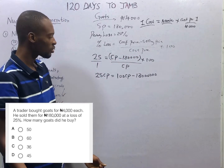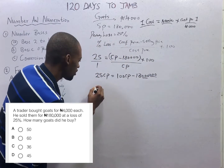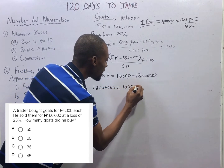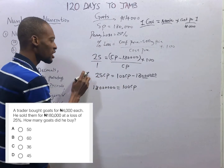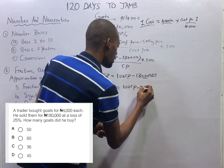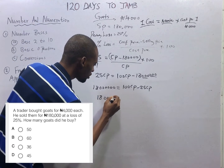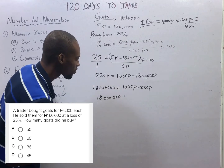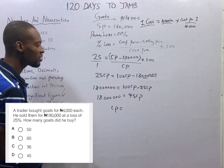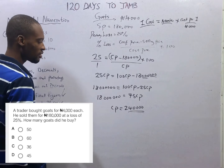Collecting like terms, bringing 180,000 times 100 to give 18,000,000, equals 100 cost price minus 25 cost price, which is 75 cost price. So, cost price is therefore equal to 18,000,000 naira divided by 75, which gives 240,000 naira. That is the total cost price.